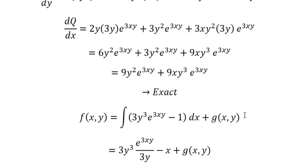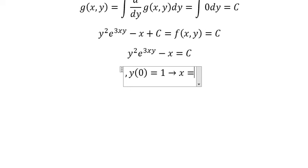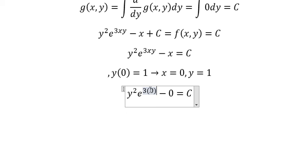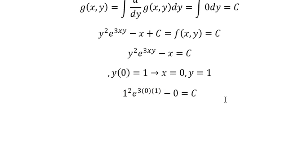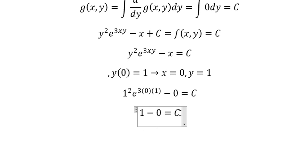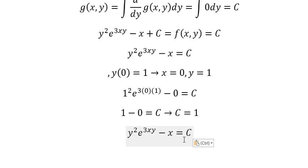Now we have initial conditions. That means when x equals to 0, y equals to 1. So I will put 0 in here, 0 in here, 1 in here, and 1 in here. So this one gives number 1, and this one gives number 1. So we have c equals to number 1. And now we put number 1 in here, and this is the final answer.